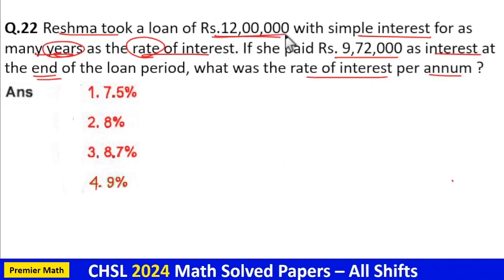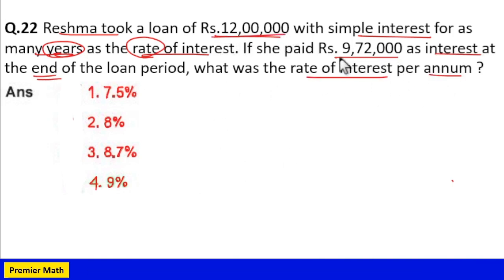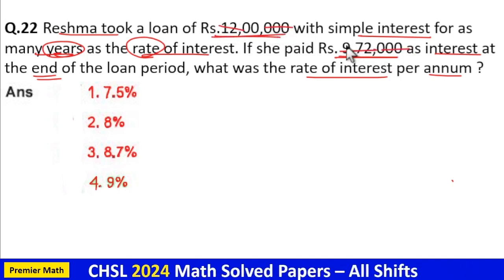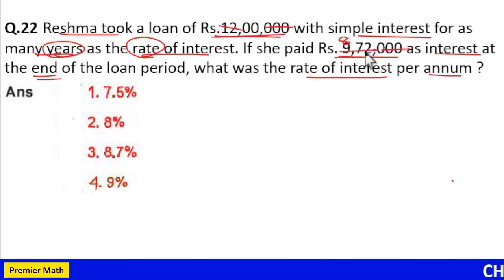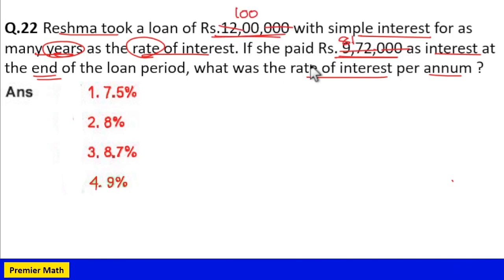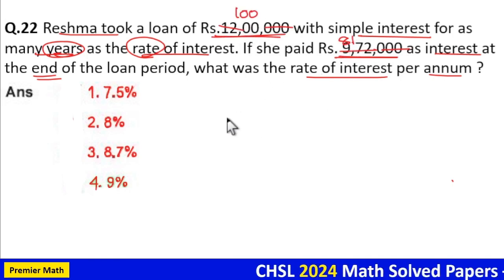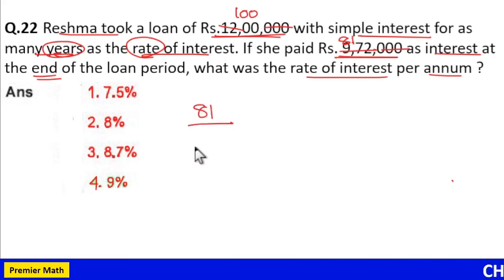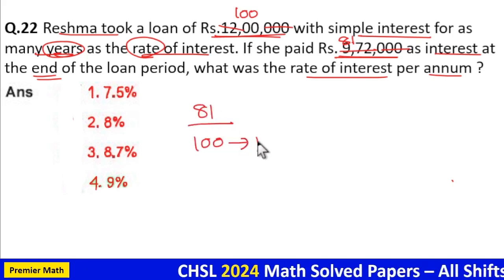Here, take the ratio of principal to total interest. Cancel the zeros: 12 goes 8 times into 96, remaining 12, and 12 goes 1 time into 12. So this gives 100 for the principal and 81 for the interest — meaning 81 units of interest were generated out of 100 units of principal.